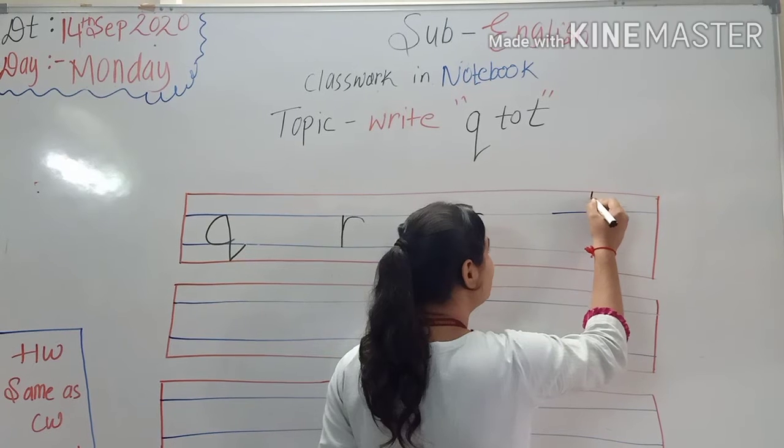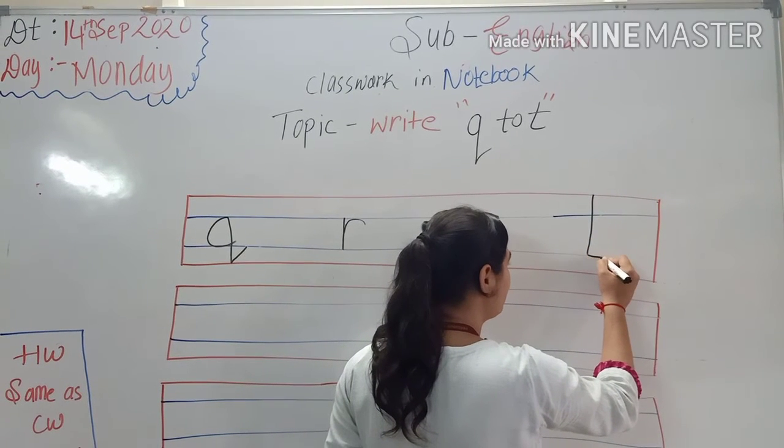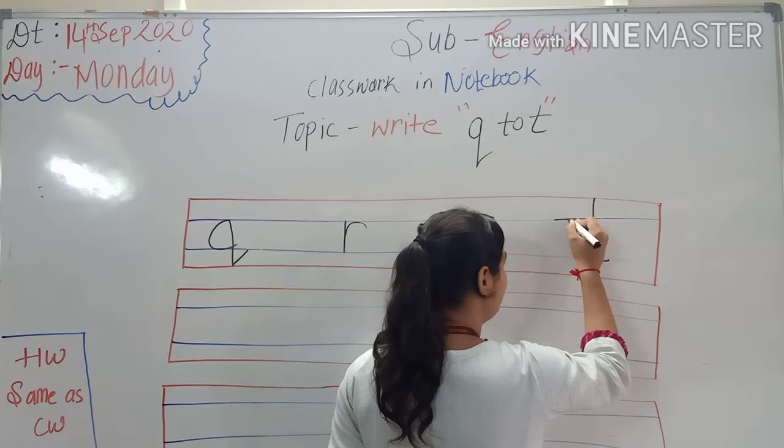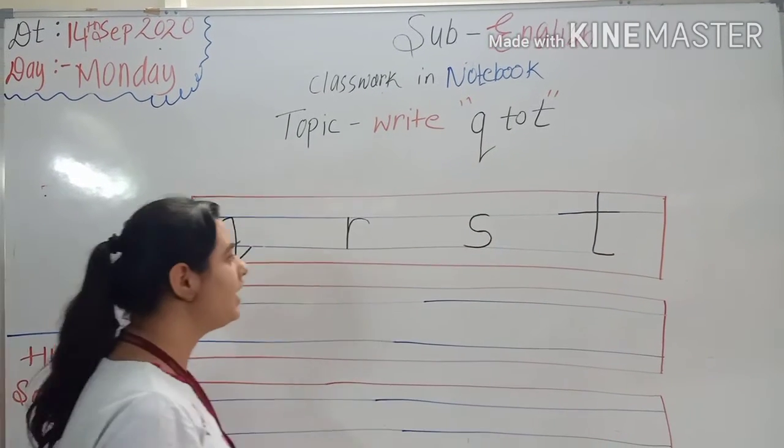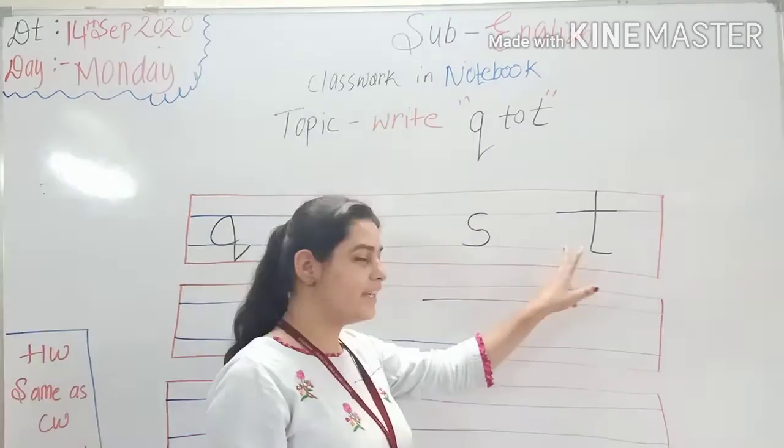Write with me kids. First we make standing line. Then in first blue line we make sleeping line like this. Okay. Q. R. S. T.